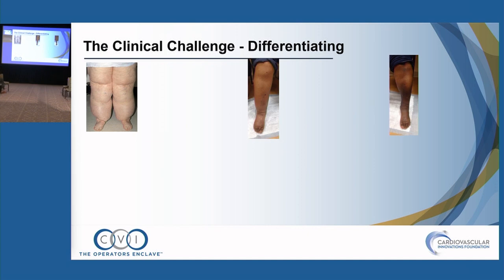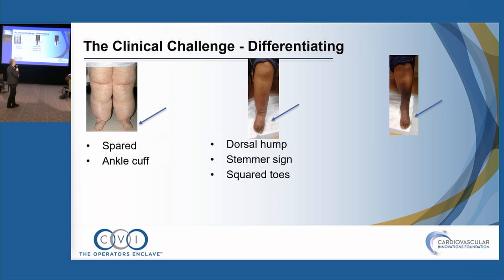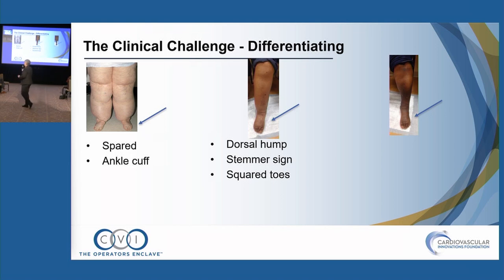Here is our clinical challenge. What helps us in all of these patients is what's happening at the foot. In lipedema, we have a spared foot with what's called the ankle cuff or ankle cutoff sign, where the swelling stops abruptly just at the malleoli. In lymphedema, we'll have a dorsal hump, and later in disease a positive Stemmer sign — the inability to pinch the skin at the base of the second toe due to deep fibrosis.